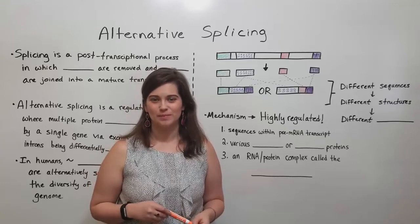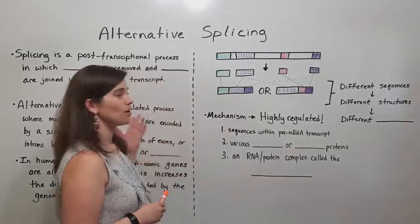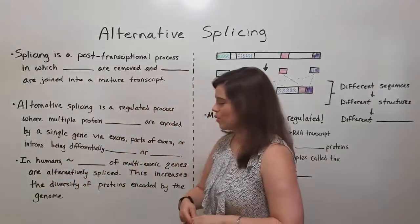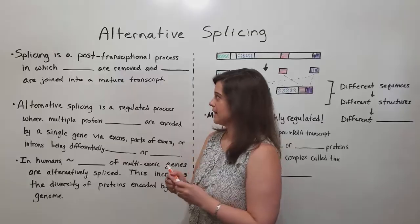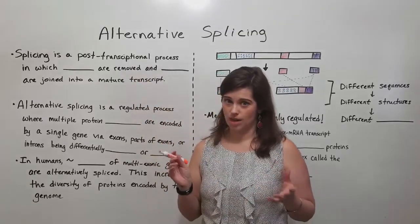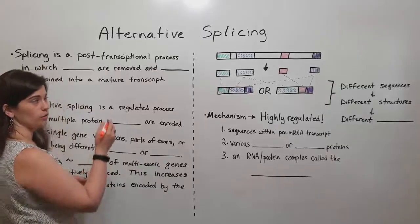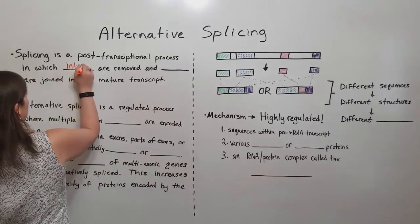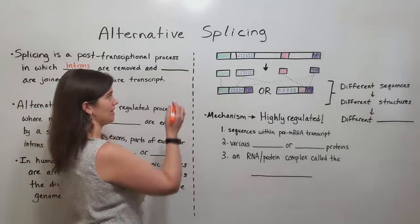Hi everyone and welcome to Biology Professor. Today's lesson is about alternative splicing. First, let's talk about what regular splicing is. Splicing is a post-transcriptional process in which introns are removed and exons are joined together.